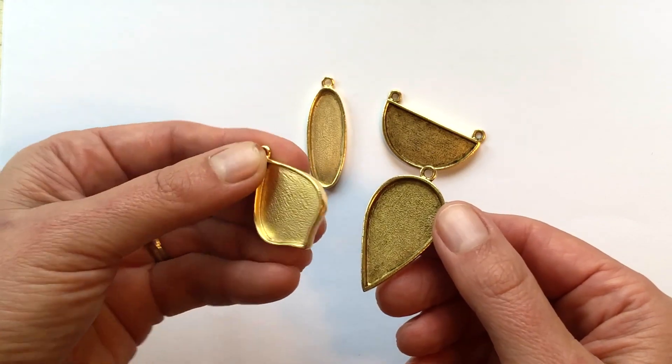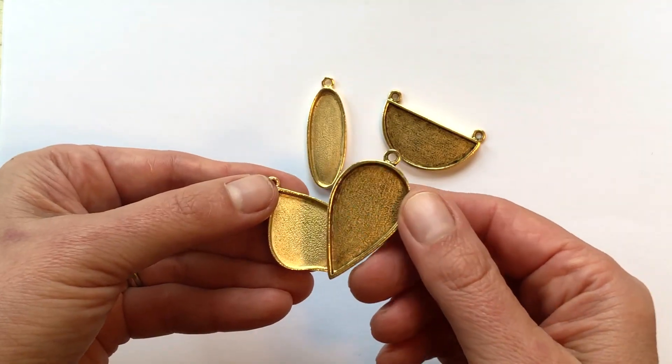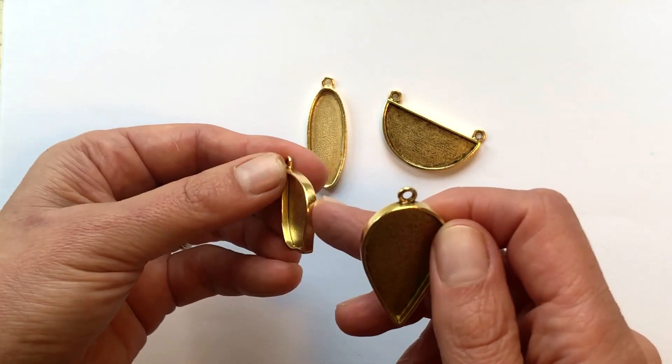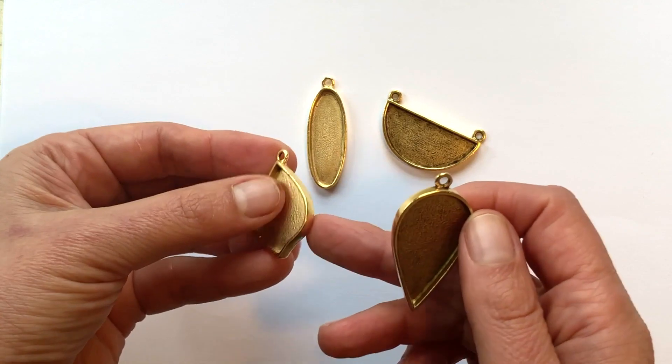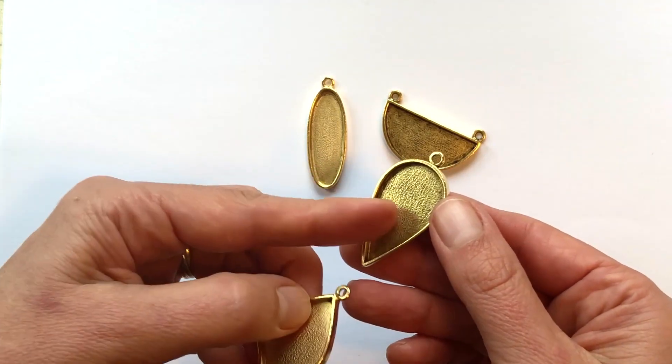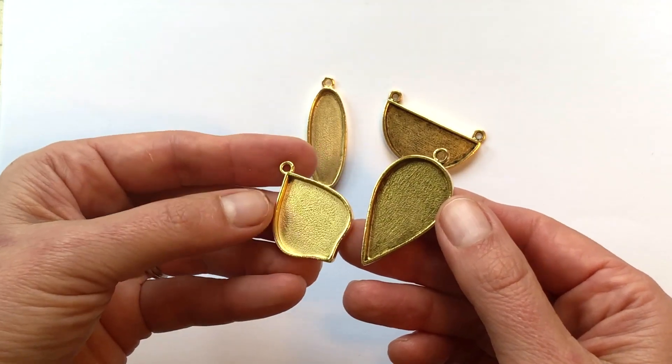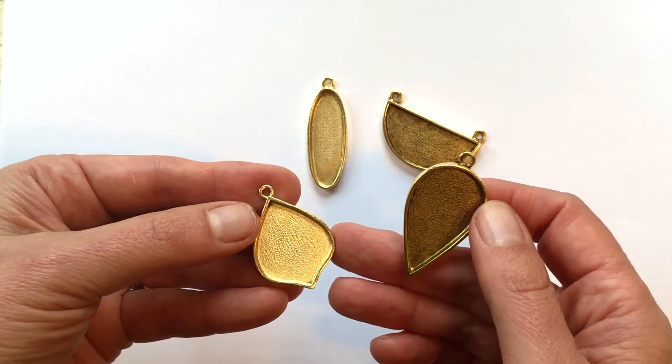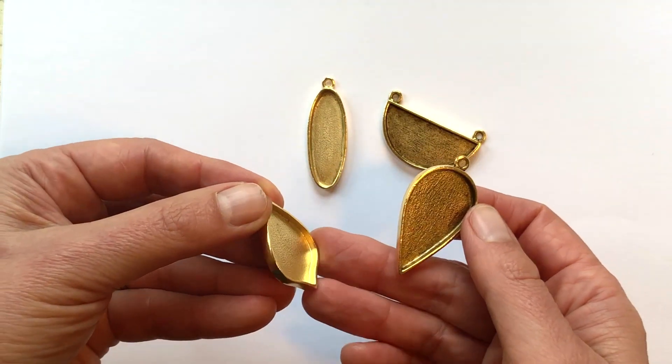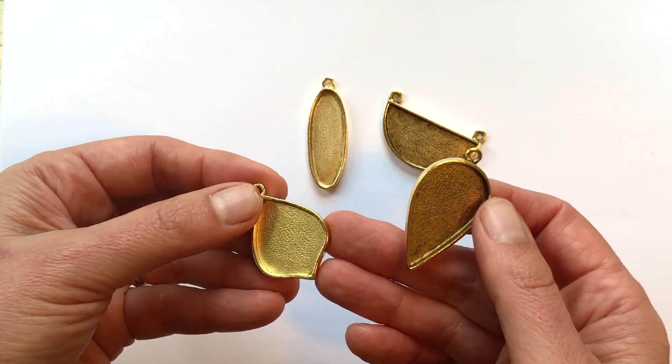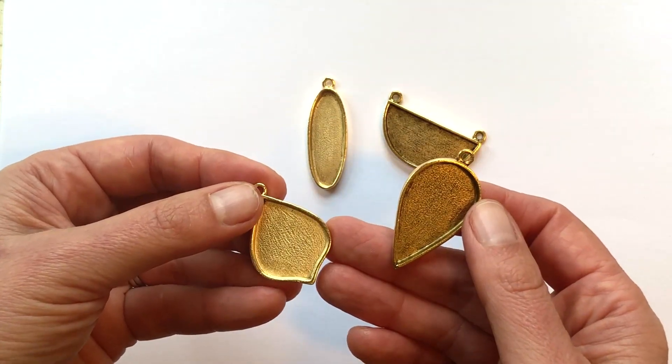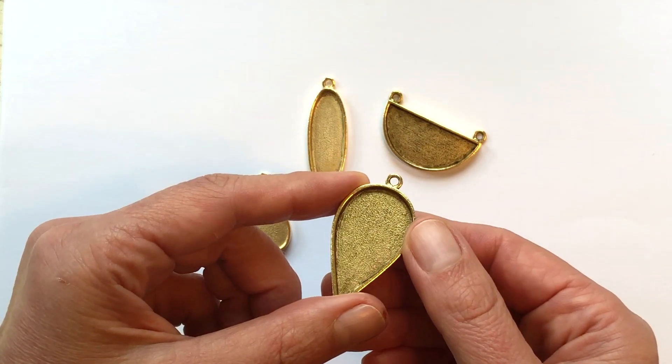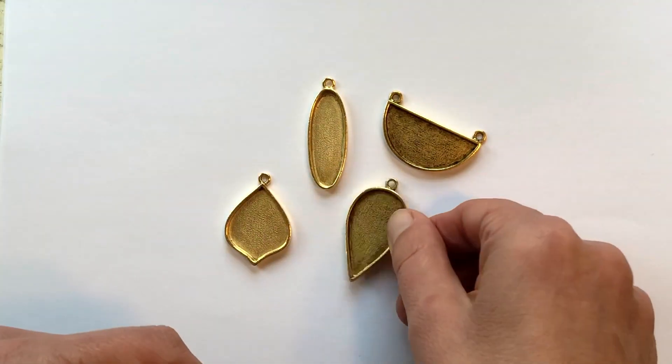This is an example of a bezel that's already been clean and this is one that hasn't. To get this look when we plate the Nunn design products with precious metals is this oxidization. The oxidization absorbs into the fine 24 karat gold and the 0.999 silver and copper and gives it an aged look. But we definitely want to clean them prior to using them.